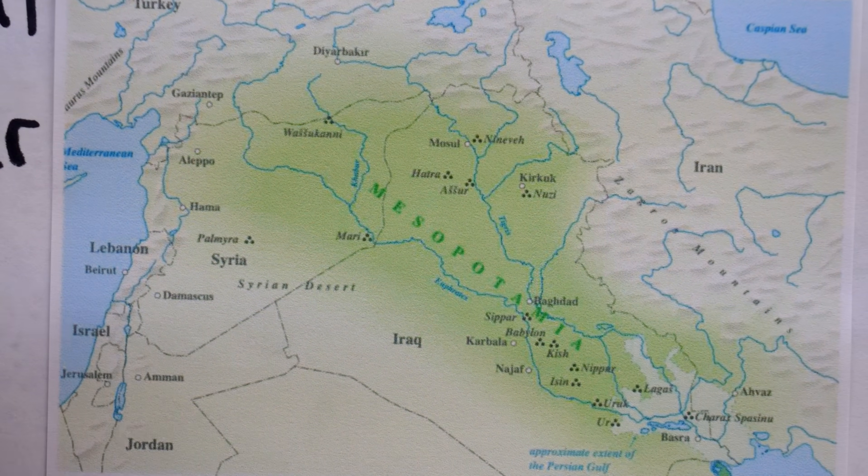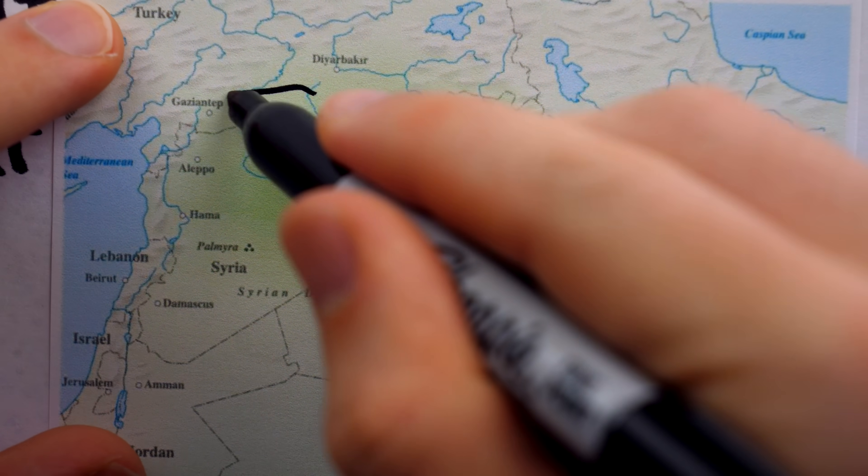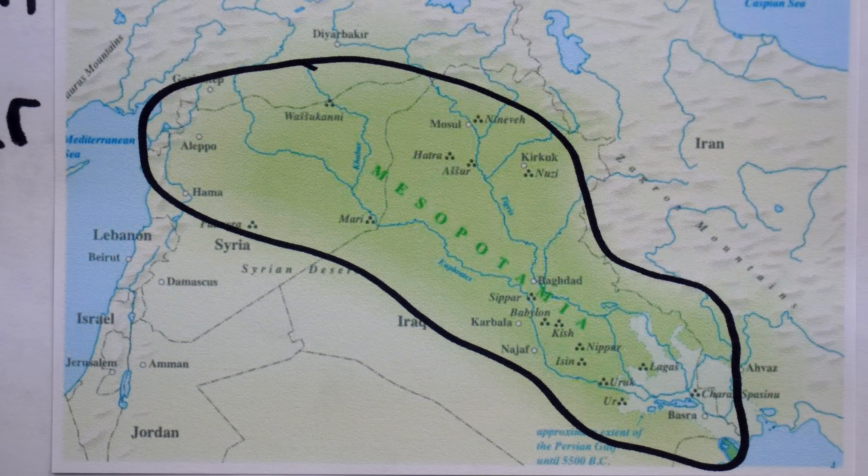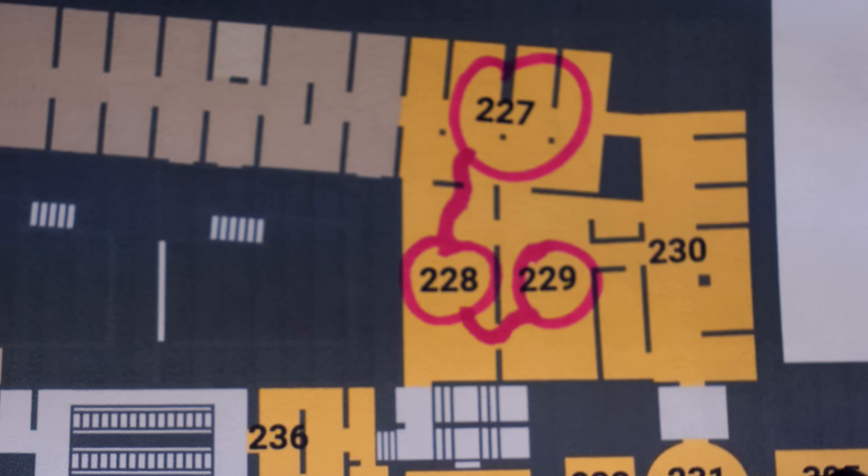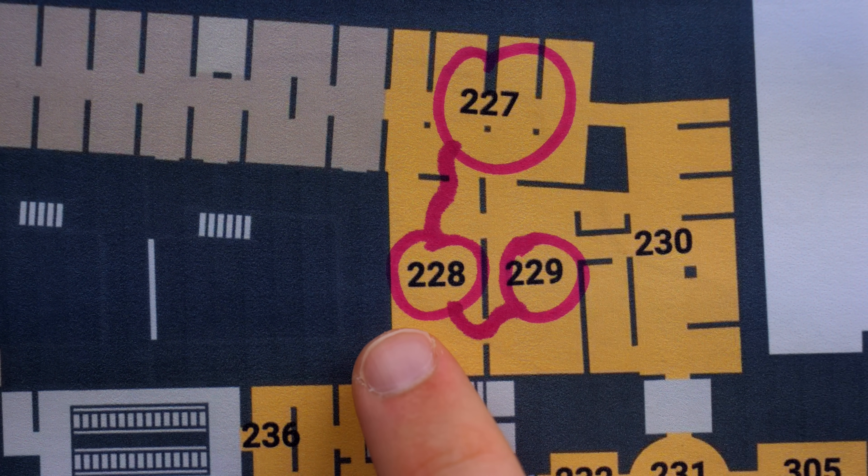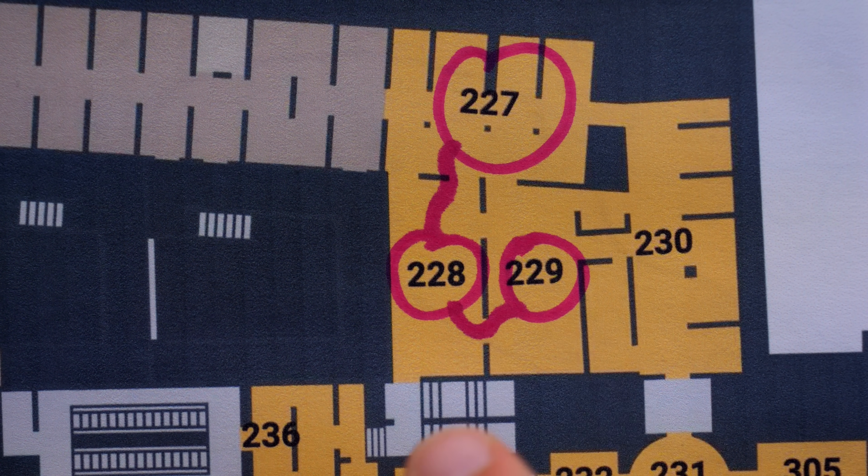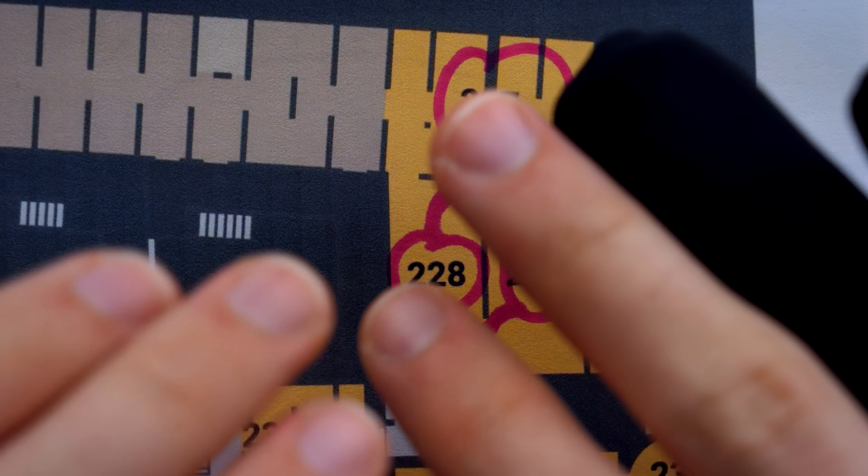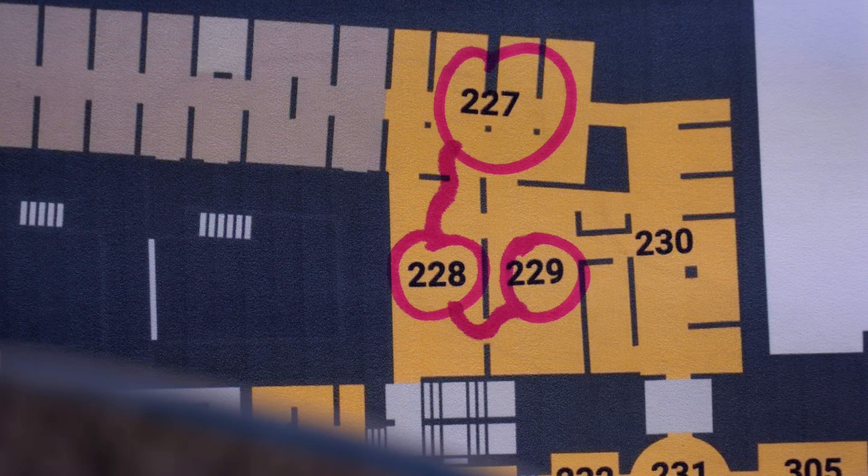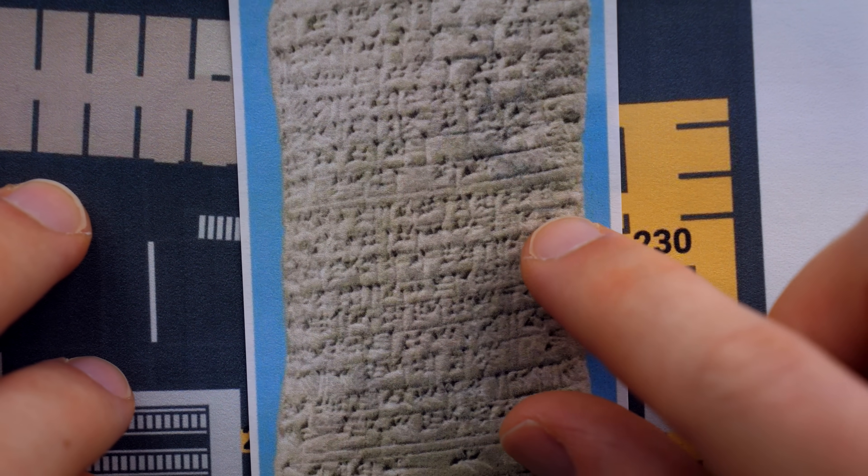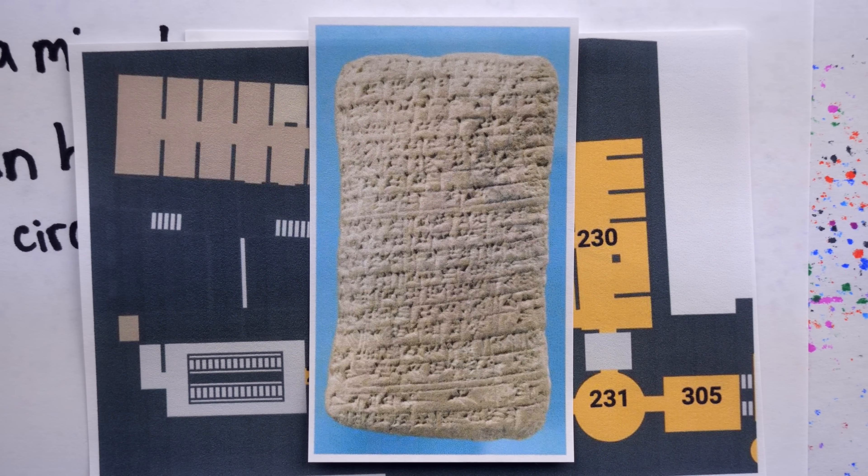The ancient Babylonians of Mesopotamia were accomplished mathematicians, so it's sad to say that in the Louvre, whether you're in room 227, 228, 229, or any other room with art and artifacts from Mesopotamia, you won't find Clay Tablet AO-6770.